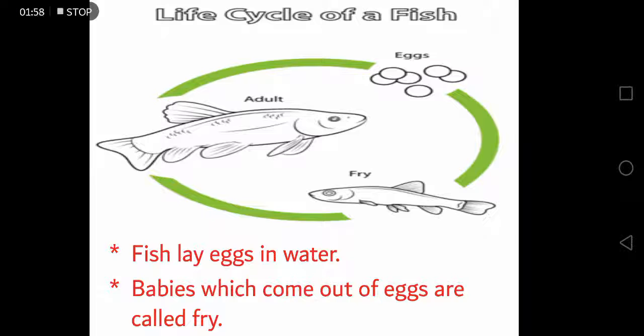Next we have the life cycle of a fish. Fish lay eggs in water and the babies which come out of eggs are called fry. This baby fish or fry then grow into the adult which then lays eggs.